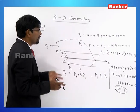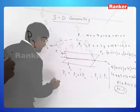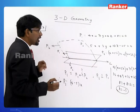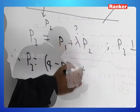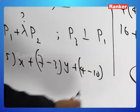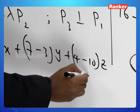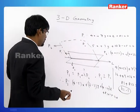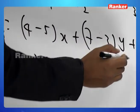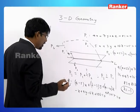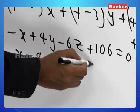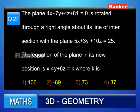Substituting λ = -1 into the expression for P3: (4 - 5)x + (7 - 3)y + (4 - 10)z + (81 + 25) = 0, which gives -x + 4y - 6z + 106 = 0. Multiplying throughout by -1: x - 4y + 6z = 106. So k = 106 and the right answer is option 1.